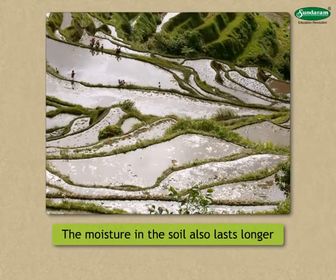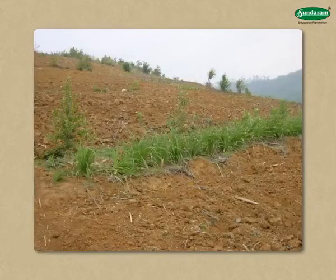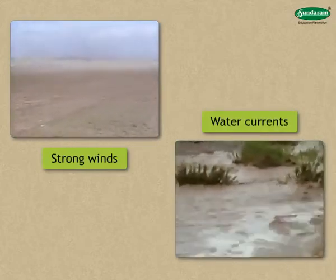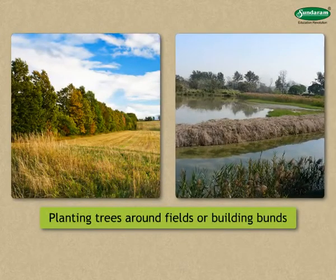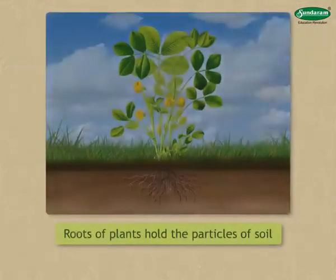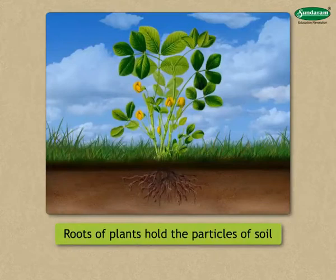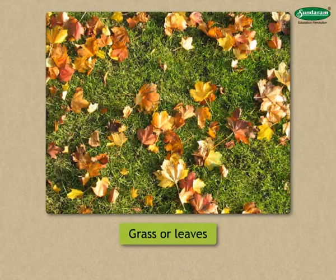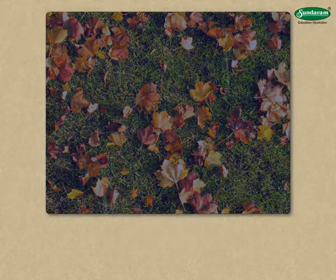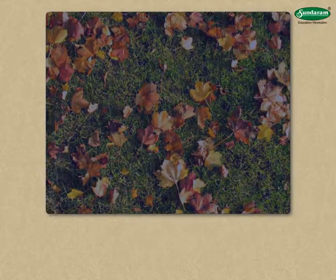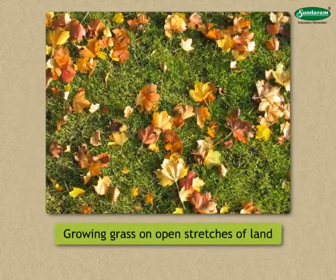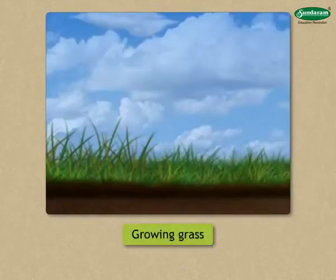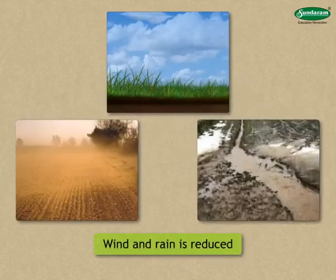Soil is not eroded only from sloping land. If strong winds or water currents flow over flatlands, they cause erosion too. Planting trees around fields or building bunds around them can prevent erosion there. Roots of plants hold in place the particles of soil in which they grow, so the soil does not flow away easily. Grass or leaves that fall from trees cover the soil beneath them, so rain cannot loosen the soil as it does not fall directly on it. Planting trees around fields and growing grass on open stretches of land are simple ways of preventing soil erosion. If the soil is covered with growing grass, erosion by wind and rain is reduced.